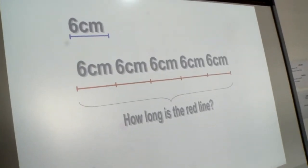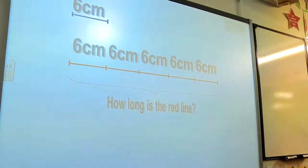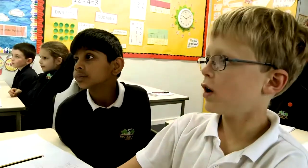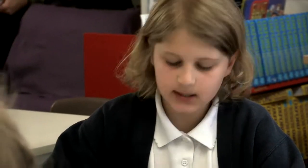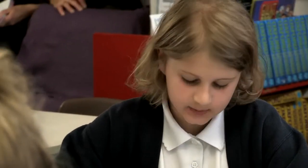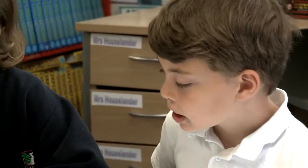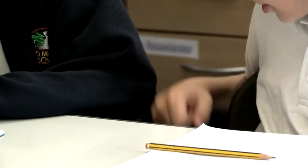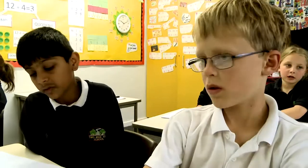Okay, here's something a little bit different. We have a six centimetre line at the top, but we have a long red line. Talk to your learning partner — what is the multiplication sentence to help us answer the question? It's 30 centimetres. Six centimetres plus six centimetres plus six centimetres plus six centimetres plus six centimetres equals 30. So five times six equals 30, or six times five equals 30.